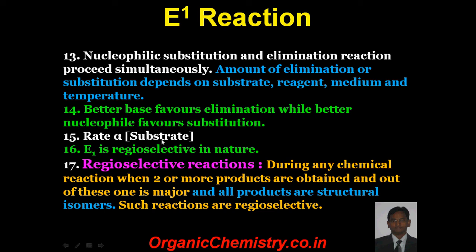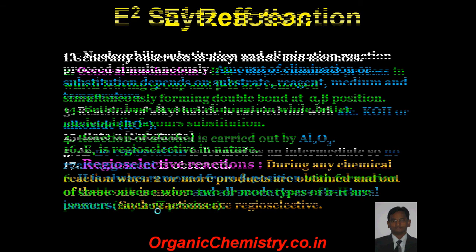The rate of E1 reaction is directly proportional to the concentration of substrate. E1 reaction is regioselective in nature. The meaning of regioselectivity is: during any chemical reaction, when two or more products are obtained and one is the major product, and all the products are structural isomers — such a reaction is called a regioselective reaction.